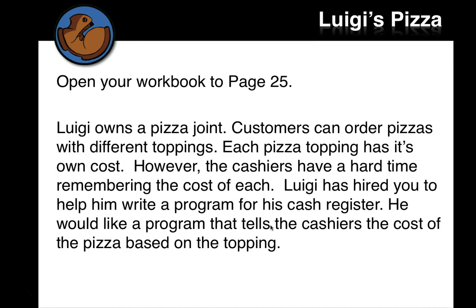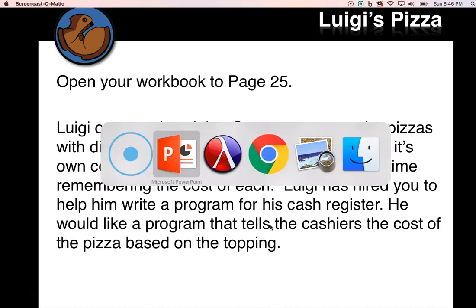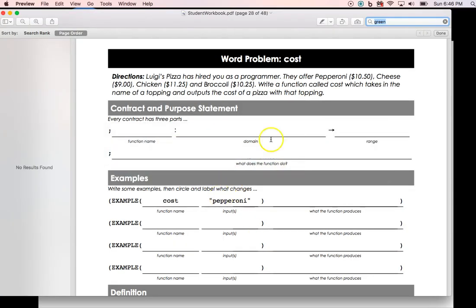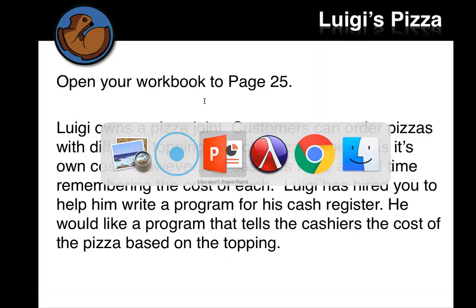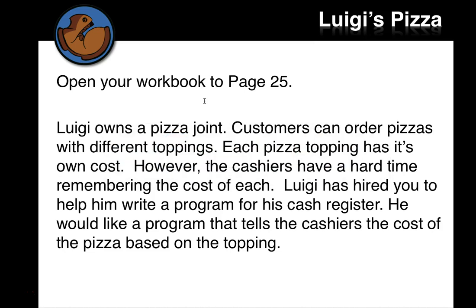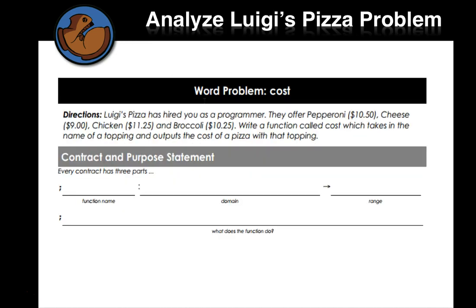So open your workbook to page 25. So here's 25, should be a word problem called cost about Luigi's pizza. So Luigi owns a pizza joint. Customers can order pizzas with different toppings. Each pizza topping has its own cost. However, the cashiers have a hard time remembering the cost of each. Luigi has hired you to help write a program for his cash register. He would like a program that tells the cashiers the cost of the pizza based on the topping.